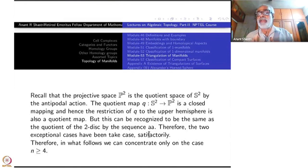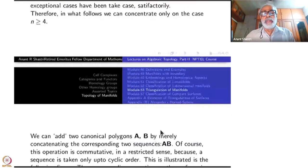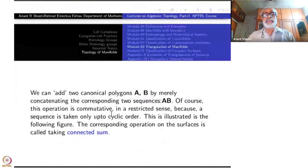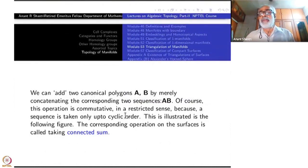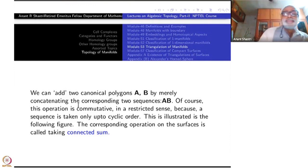Now let us concentrate on N greater than or equal to 4 only. So I will have this kind of operation here now and notation. We can add two canonical polygons. So one polygon is A, A is a sequence of length 2N. Another is B, B is another sequence of length 2M. By merely concatenating the corresponding two sequences, A, B. So it will be of length 2N plus 2M.